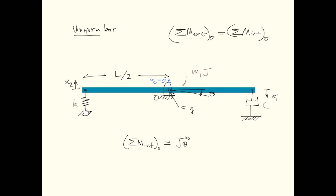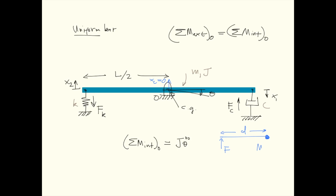First, we have the force from the spring. If this end of the bar goes up, there is always a spring force trying to pull the bar back down, so we label this force Fk. Second, we have the force from the damper. Because the damper dissipates energy, the force Fc acts against the direction of motion of the bar, producing a moment at point O also in the opposite direction to the inertia moment. Recall that if a translational force F acts at the end of an arm of length D, the moment at the center of rotation is F multiplied by D.